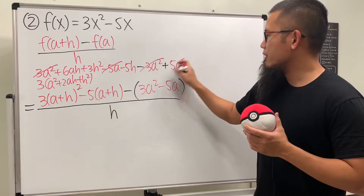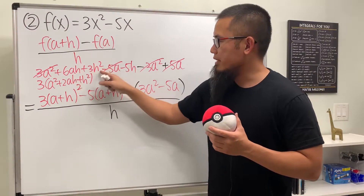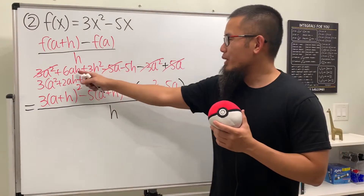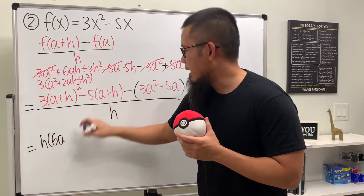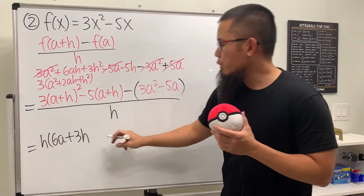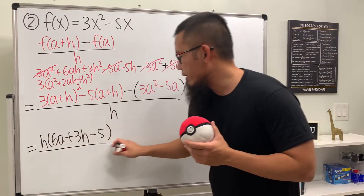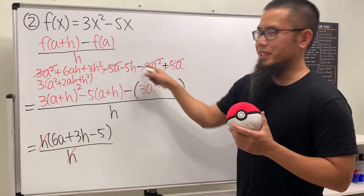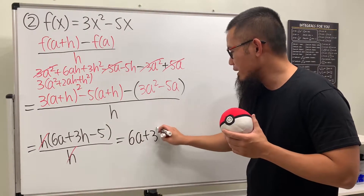After cancellation, 3a² cancels with -3a², and -5a cancels with +5a. Notice the remaining terms all have an h, so we factor it out: h(6a + 3h - 5). This h cancels with the h in the denominator, confirming we did it right. The answer is 6a + 3h - 5.